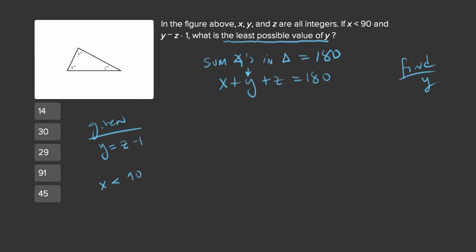Now I'm not going to plug in for y because y is what we're trying to solve for. So I'm going to change this equation a little bit and let's add 1 to both sides. So that I can get y plus 1 equals z and I can actually plug in for z. So I'm going to take that y plus 1 and I'm going to plug it into this equation for z.